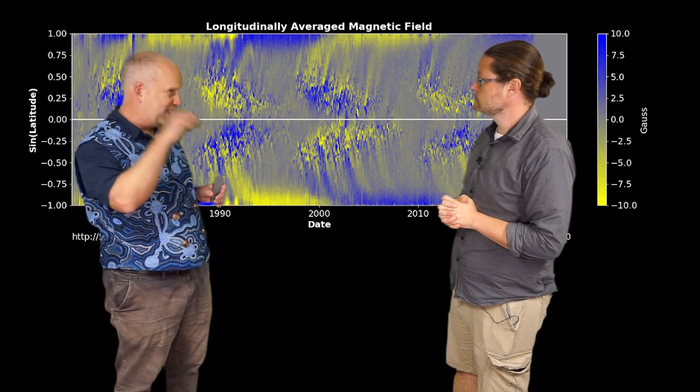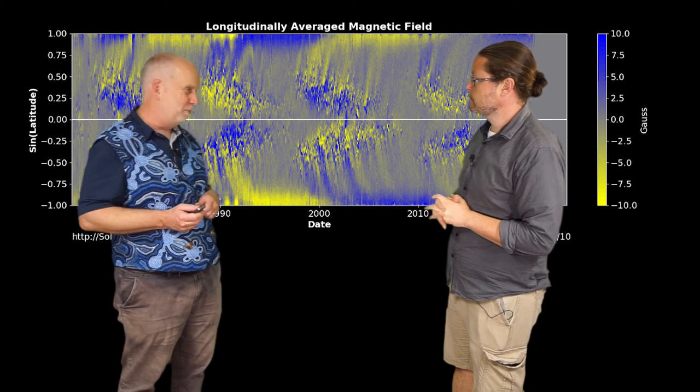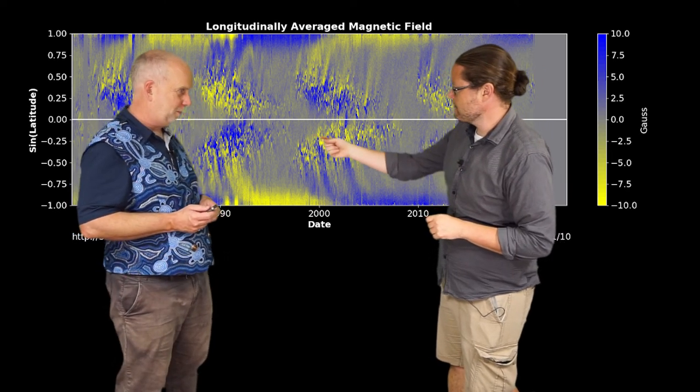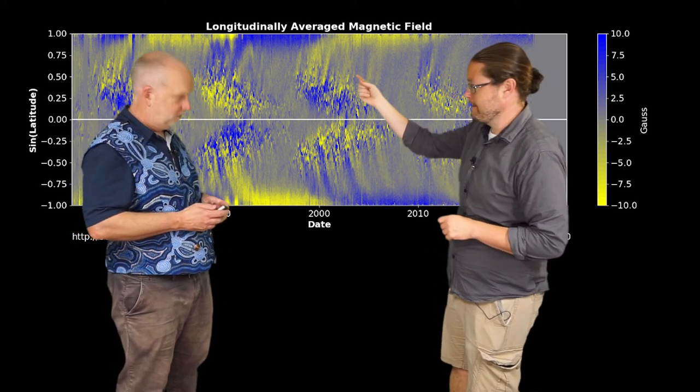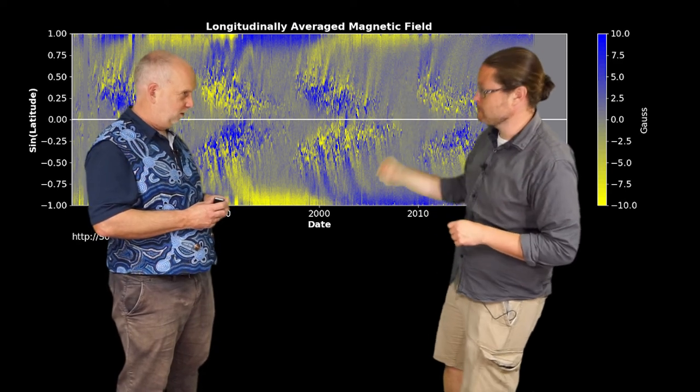And you can actually see the magnetic fields reversing because you can measure whether the field is going out or going in by various complicated techniques. So you can see it's coming out in one pole and then in the other. So it's kind of bouncing and rotating between poles.